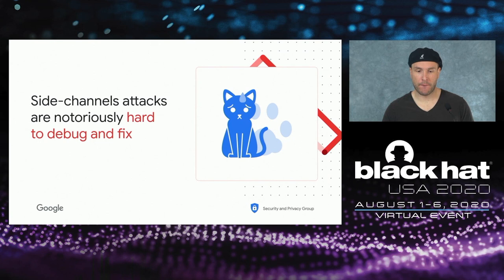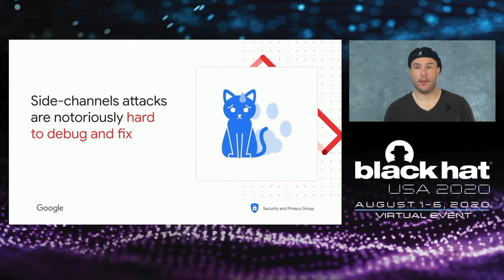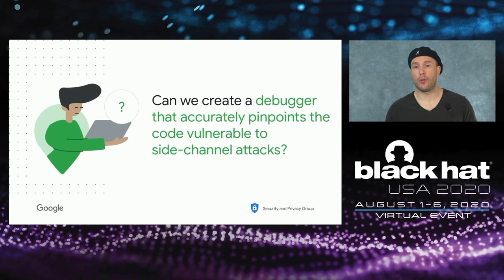One of the problems when you develop hardware compared to software is that debugging it is harder because we have to find where the side-channel attack came from — where is the leak in the code. This leak is usually due to the interplay between the software and the hardware, so you have to look at both at the same time. This is what makes it so hard. We need to help reduce the cost of finding the attack and pinpointing them accurately.